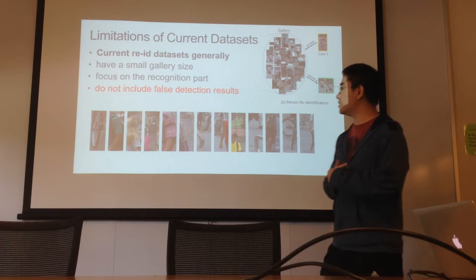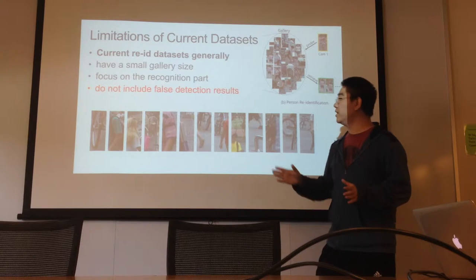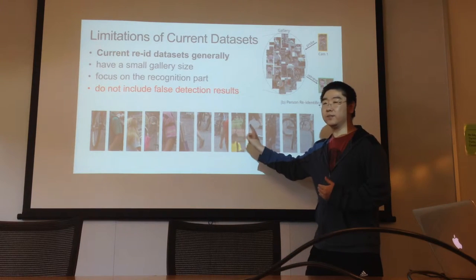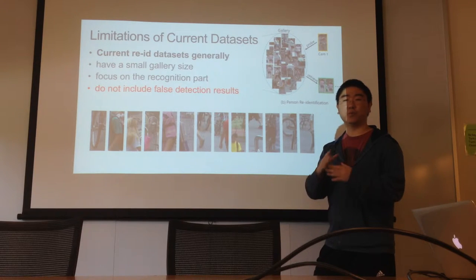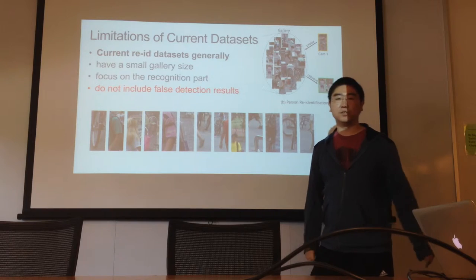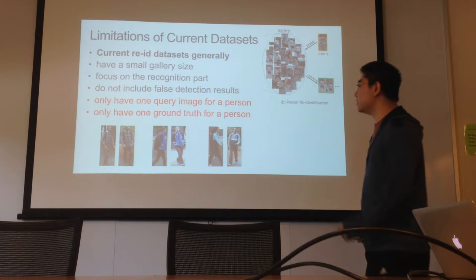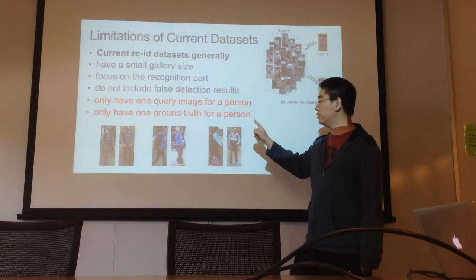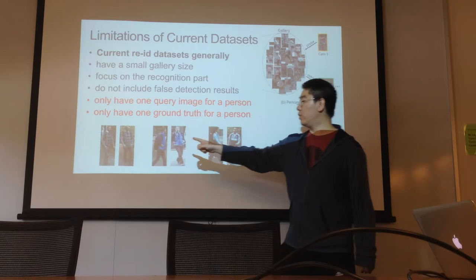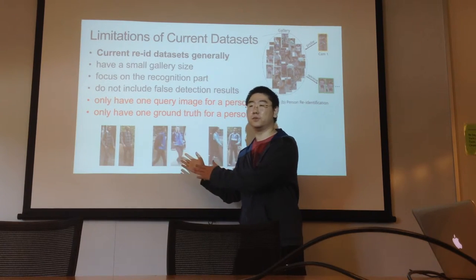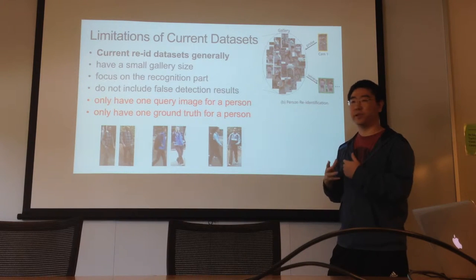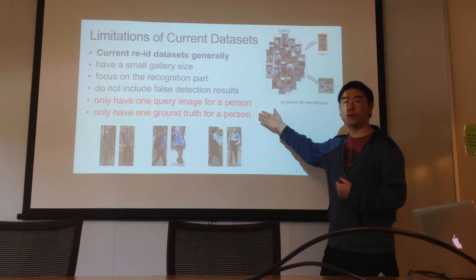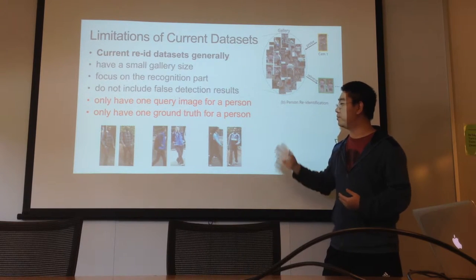The third problem is that since current datasets use hand-drawn bounding boxes, they do not include false detection results. Detectors always produce some false detection results, and these background detections impact recognition accuracy. That is the third limitation. Additionally, current datasets only have one query image per person and only one ground truth per person. With this data, we cannot make full use of multiple queries or video data, and we cannot design re-ranking methods that take advantage of multiple queries or multiple ground truths.